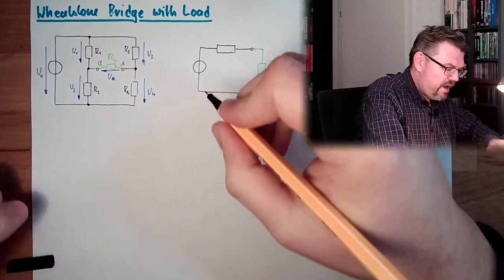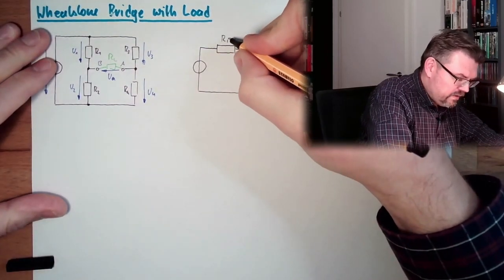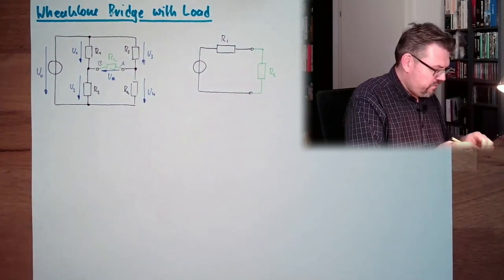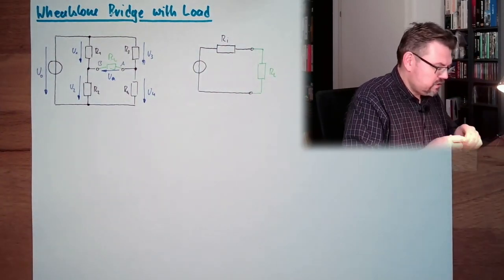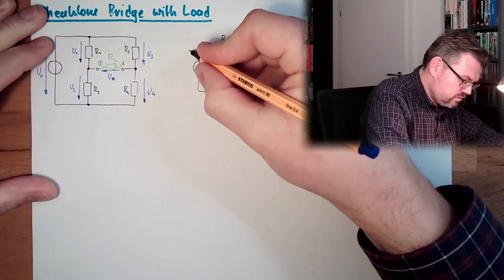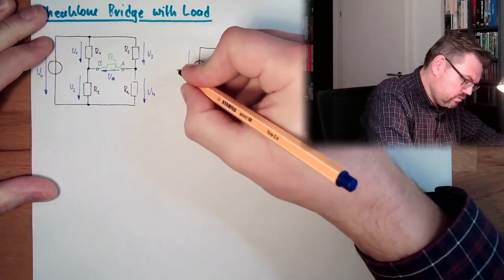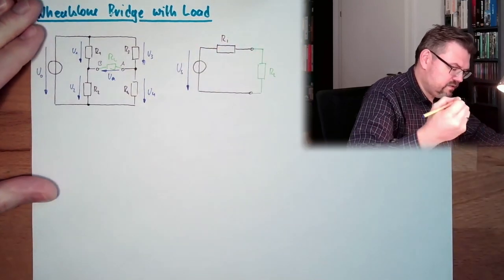We have here an Ri, we need to determine an internal resistance, and we have here a voltage source voltage, I call it Us for source voltage.